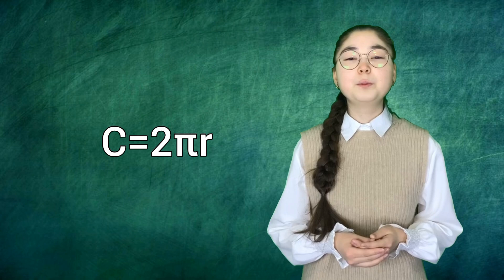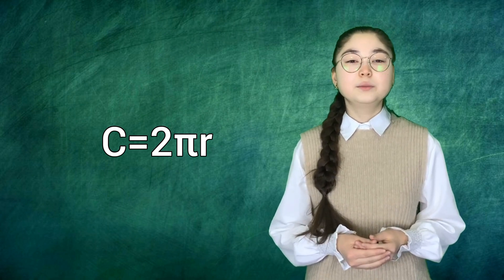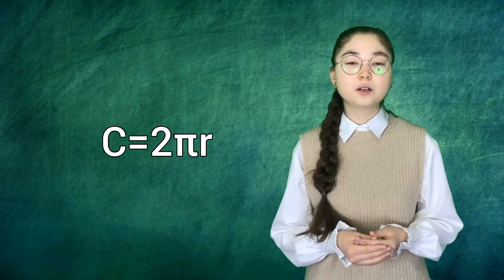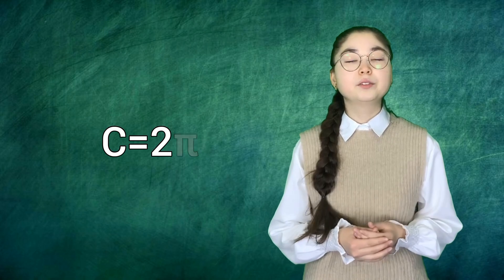So c consists of 2π times an arc with length r. Therefore, the measure of the central angle corresponding to the complete arc of a circle is 2π radians.